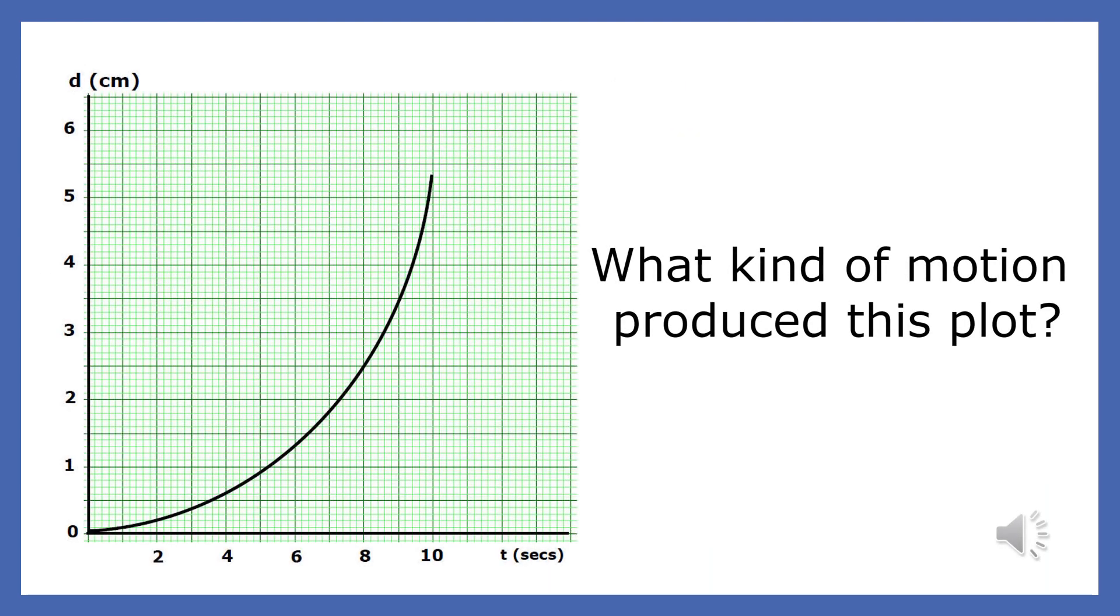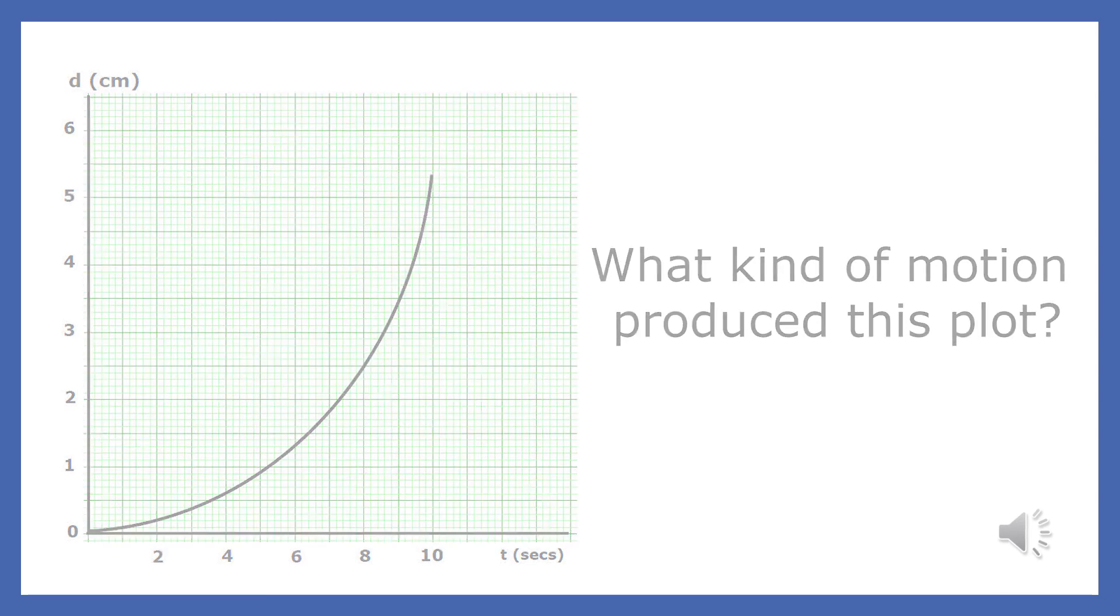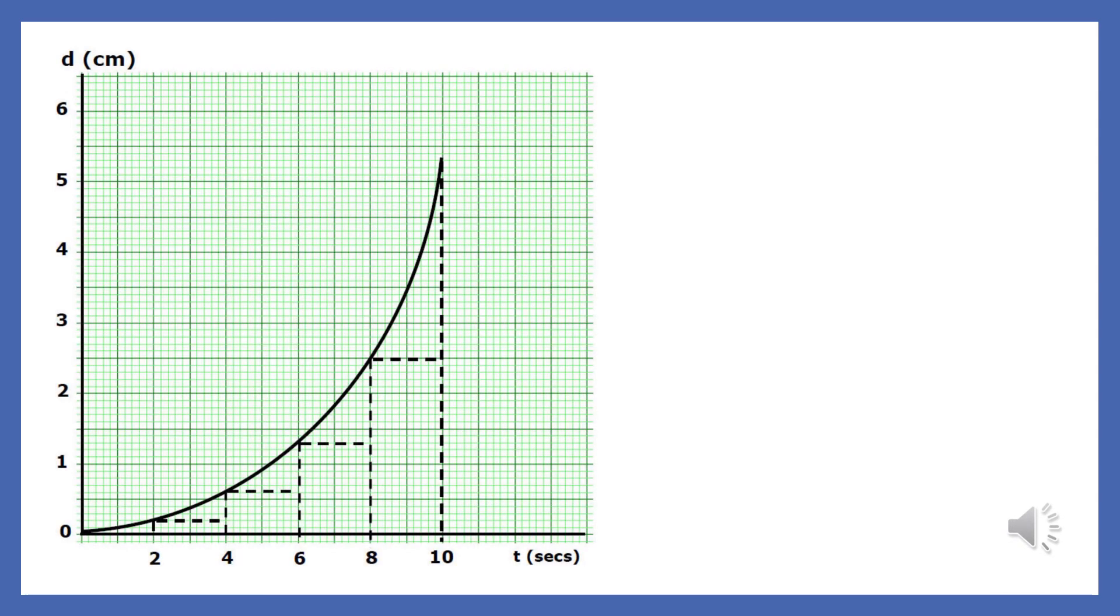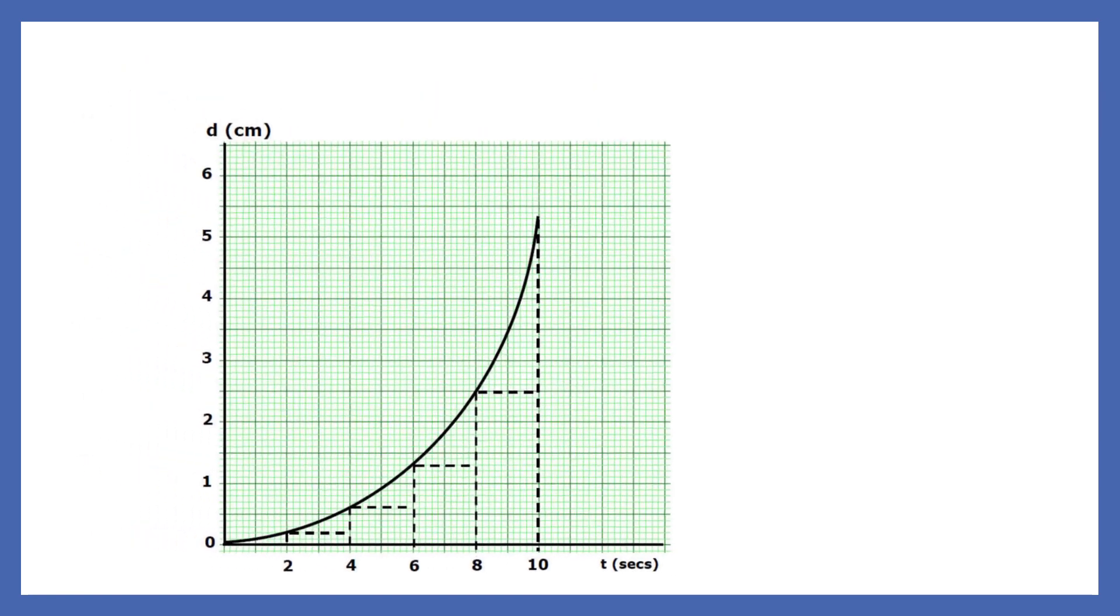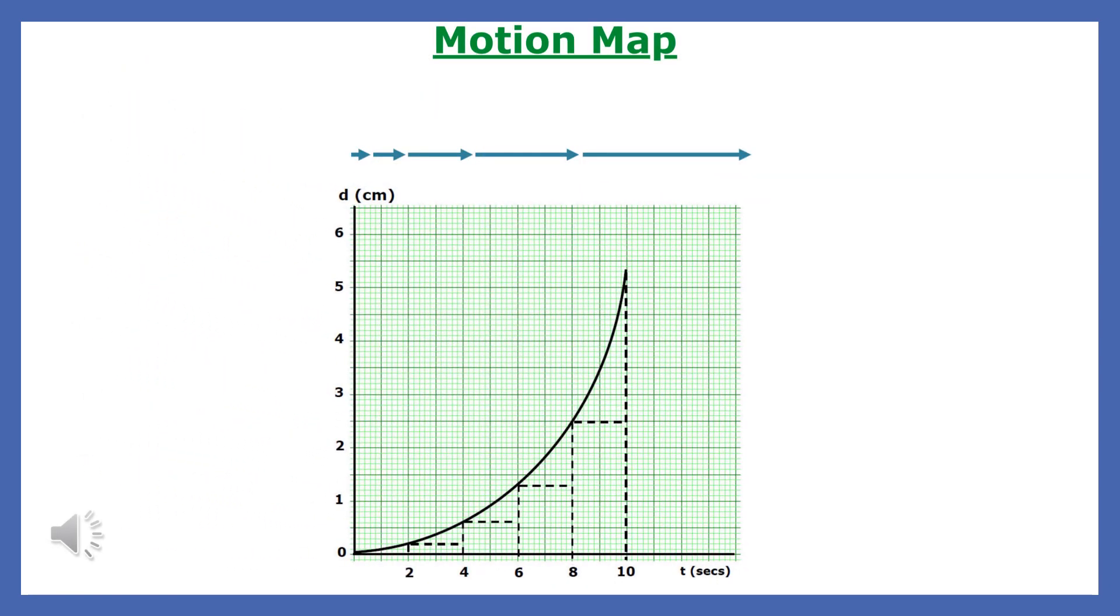This distance versus time plot has a different shape than the previous. One way that it's similar to the last plot is the distance from the start increases the entire time, and the object gets further and further from the starting point. When we look at the plot at 2-second intervals, we see that the object makes greater and greater gains in distance for each successive 2-second interval. The velocity is not constant, but increasing. Here is the motion map for the motion shown in the plot. Since the slope increases the entire time, the velocity is changing at every moment.